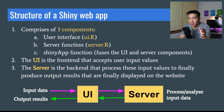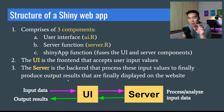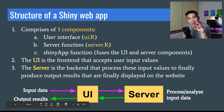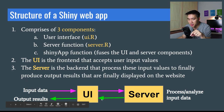The UI is the front end that accepts user input values. The server is the back end that processes those input values to produce output results displayed on the website. Input data flows into the user interface — the website you see — you enter data into a text box, it's submitted to the server, the server processes the information, produces the result, and the result is displayed on the website.